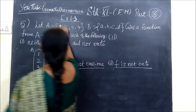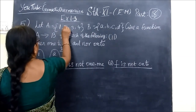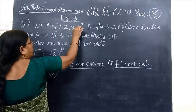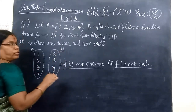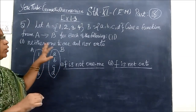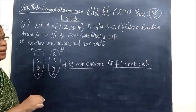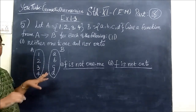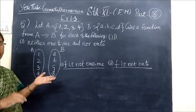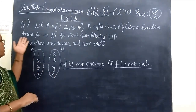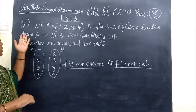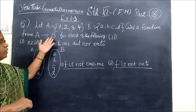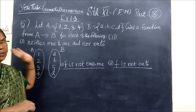Let A equal to {1, 2, 3, 4}. You are given domain {1, 2, 3, 4} and codomain {A, B, C, D}. Give a function — that means we have to construct a function that is associated from A to B for each of the following.